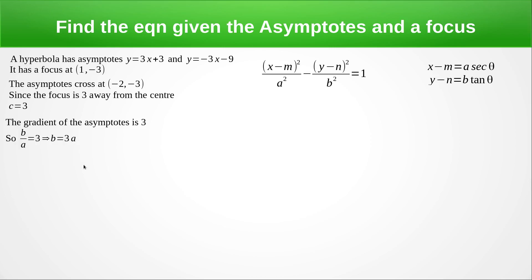We do have a connection between a, b and c, which is c squared equals a squared plus b squared. Let's put in everything that we know. So c is 3, so we get 9. a is a, so it's a squared. But we know that b equals 3a, so we get 9a squared.